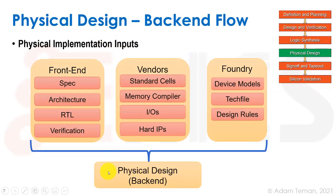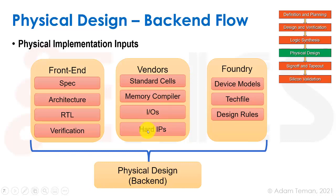When we talk about the back-end flow — which is what we'll be discussing for a lot of this course — it's this physical design part. It has three main players at the top. The foundry has to provide the device models, the technology file, and the design rules. Vendors, on the other hand, can build standard cells, a memory compiler to give us SRAM blocks, an IO library for input-output circuits, and different types of hard IPs. At the front end, we have our spec, architecture, the RTL we'll build, our verification, IPs from vendors, soft IPs, verification IPs, and so forth. Those are the three main players. Going into the back-end, we also need the foundry and standard cell definitions to implement our chip.